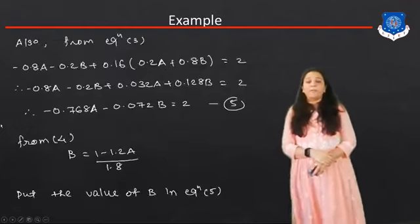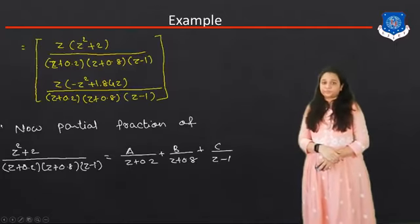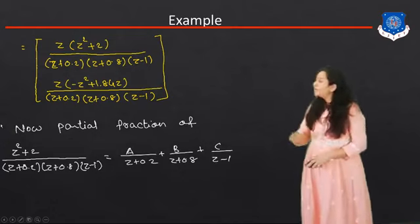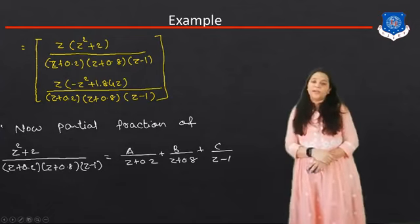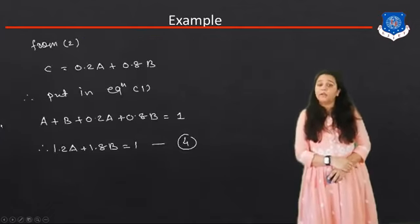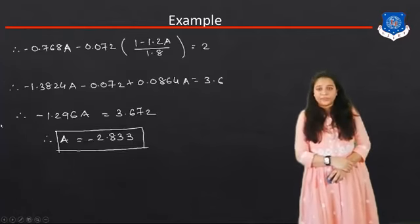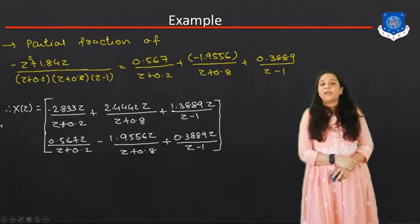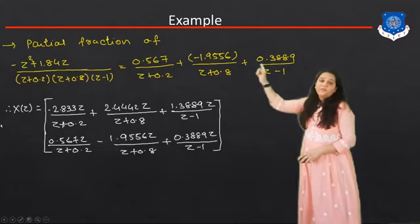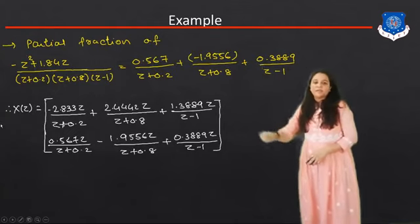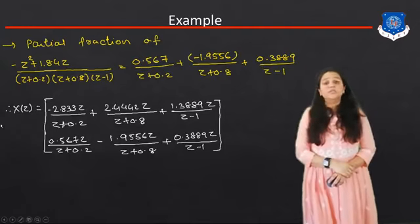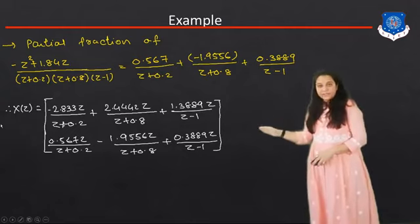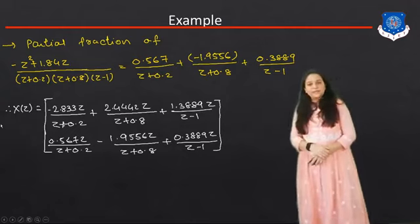For the second element (-Z² + 1.84Z) / [(Z+0.2)(Z+0.8)(Z-1)], applying the same partial fraction method gives A = 0.567, B = -1.9556, and C = 0.3889. With all coefficients found, we can now write out the complete matrix X(Z).